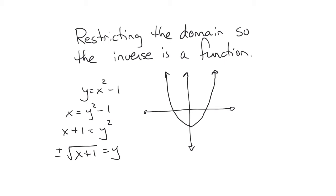I want to illustrate what's going on here. I'm going to take the parabola and color the left-hand side red and the right-hand side blue. When you find the inverse, it's automatically broken up into two parts: the positive square root of x plus 1, which starts at negative 1 and goes up, and the negative square root of x plus 1, which starts at negative 1 and swoops down. When I draw a vertical line through that inverse, it is not a function — my vertical line hits it more than once.